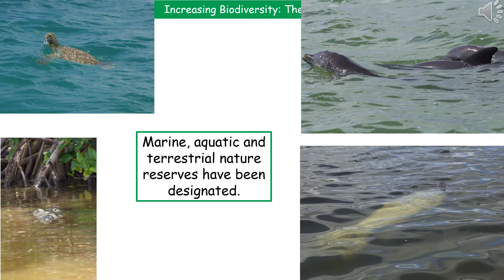One way we can go about this is by creating nature reserves. These can be marine, aquatic, or terrestrial — basically in the sea, in water, or on land. By designating them a nature reserve, we've protected that area. The pictures shown are from a marine nature reserve in Mexico designated as the biosphere, where animals are protected — including manatees, dolphins, and turtles.